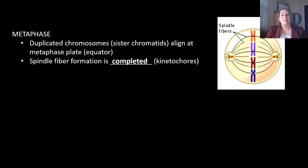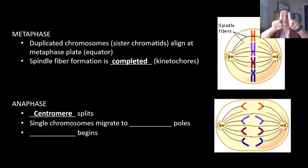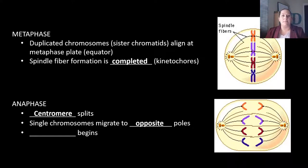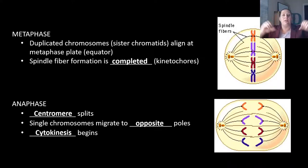Anaphase is when the centromeres actually split — that center part between the two chromosomes splits so they can move to opposite poles. The single chromosomes then migrate to the opposite pole or opposite side of the cell. Cytokinesis begins here as well; you'll notice the cell has elongated, getting ready to pinch in the middle and pull apart into two cells.